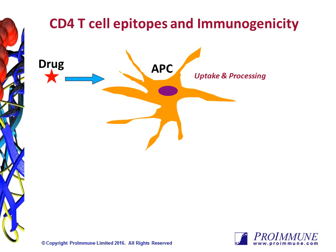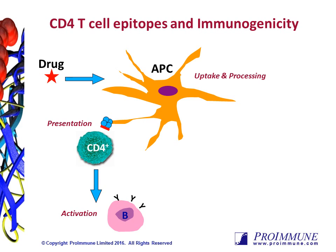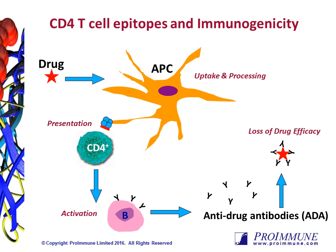In this cartoon, the drug is first taken up and processed by a professional antigen presenting cell, such as a DC. Those DCs will present peptide epitopes within the context of an MHC class II molecule to helper CD4 T-cells. This interaction is key in driving the remainder of the response, as the activated T-cells can provide help to the B-cells. Activated B-cells can then secrete anti-drug antibodies, which can result in a loss of efficacy, altered PK and PD, and even cross-reactivity.